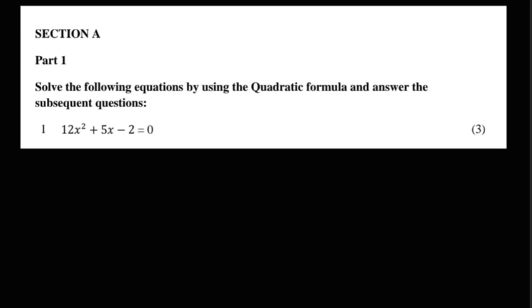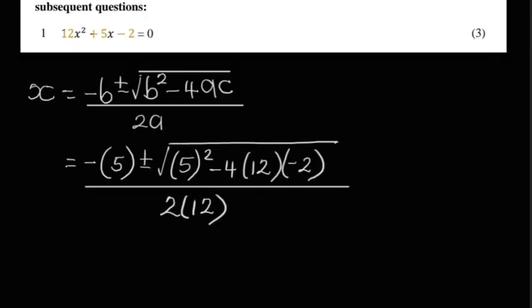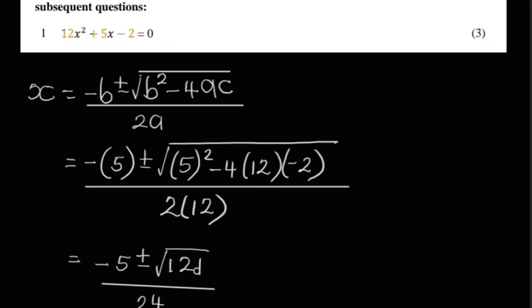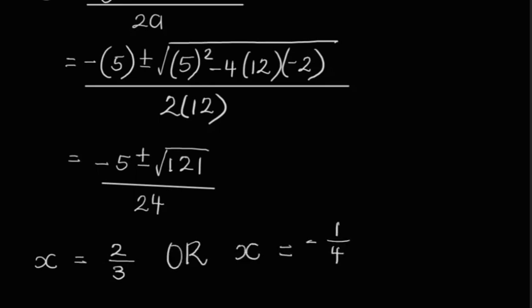Let's start off by writing down the quadratic formula. We're now going to substitute in our values for a, b, and c. The a value is the coefficient of x squared, which in this case is 12. The b value is the coefficient of x — here we have positive 5 — and the c value is the constant, which is negative 2. Once we substitute, it's important to simplify first. Doing that, we get negative 5 plus or minus the square root of 121, over 24 in the denominator. Working with the plus we get x = 2/3, and working with the minus we get x = -1/4.